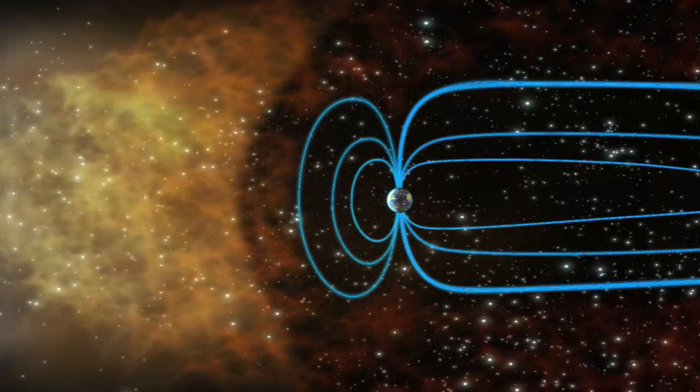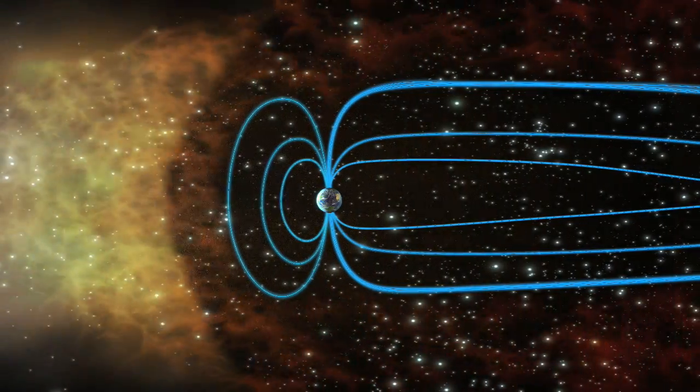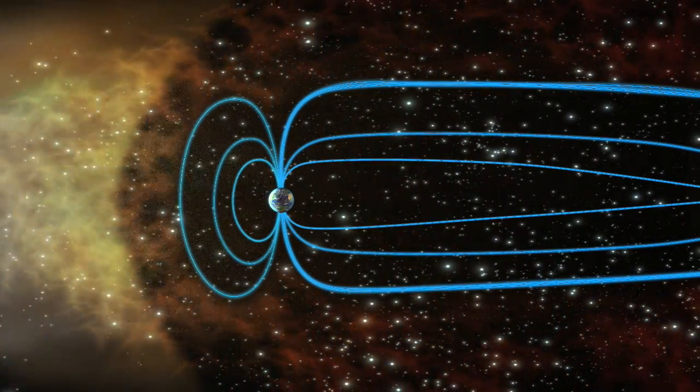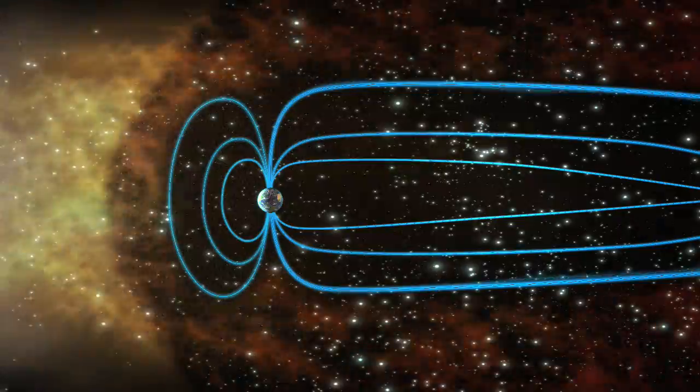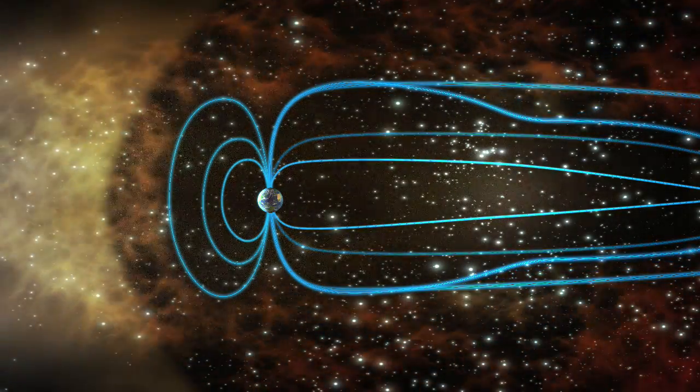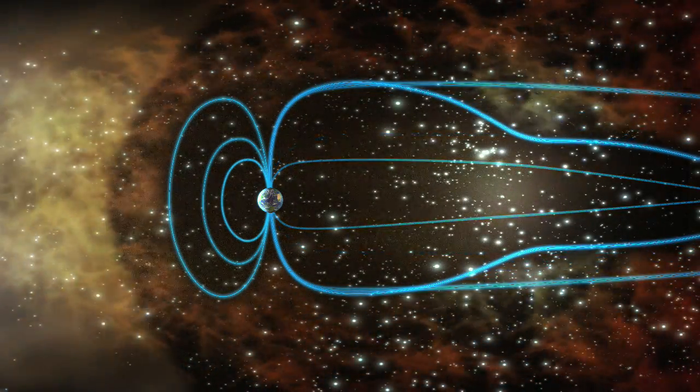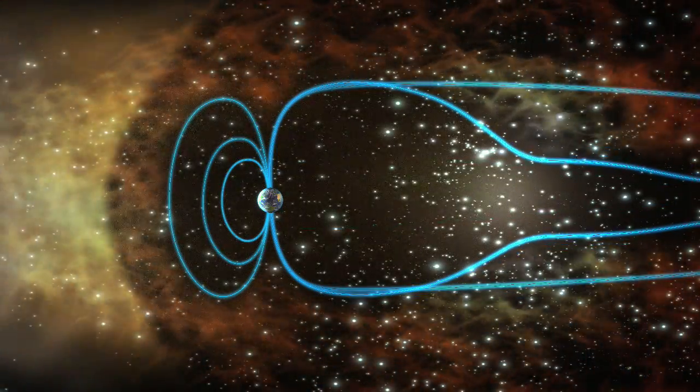Beneath this boundary is the magnetosphere, which is molded as the flow of the particles is diverted around the Earth. The magnetosphere's long tail stretches millions of kilometers away from the Sun.